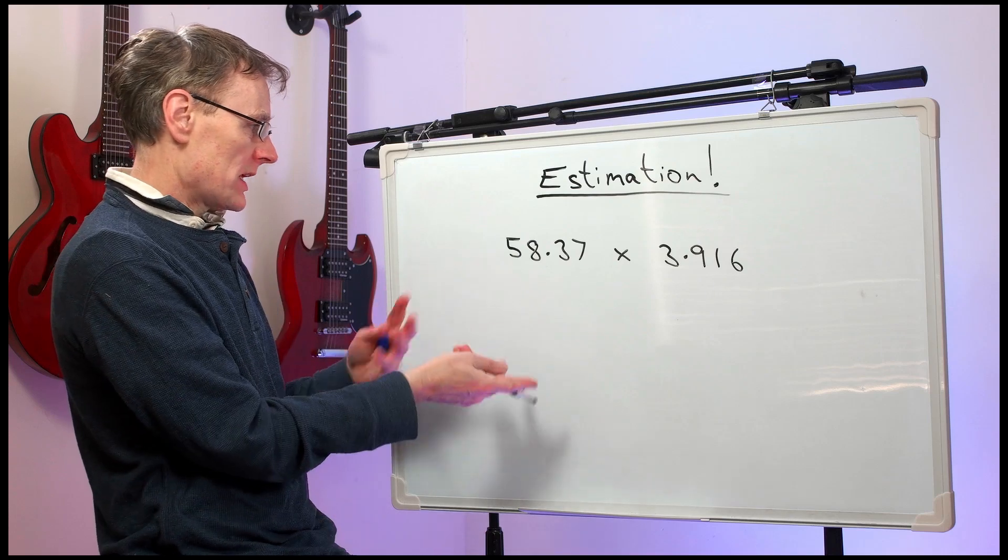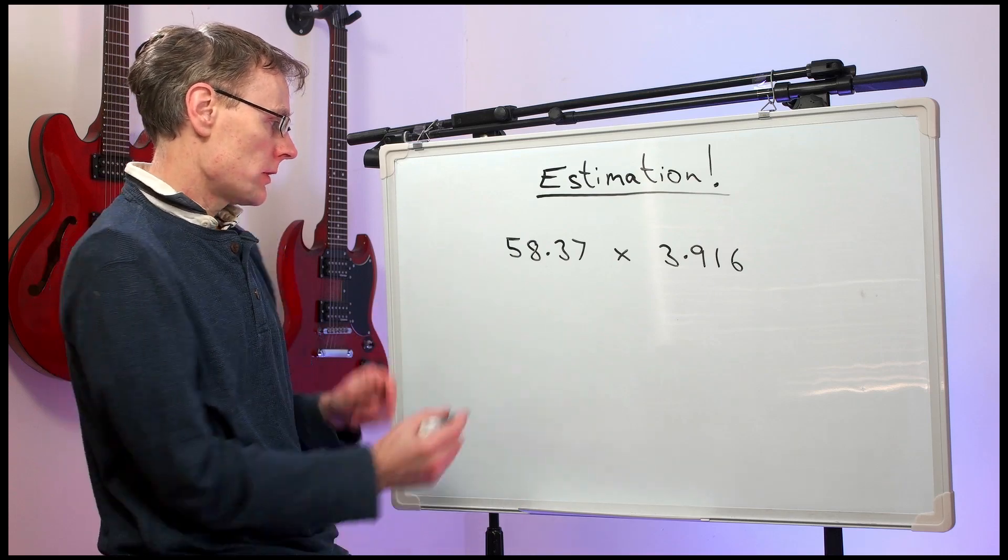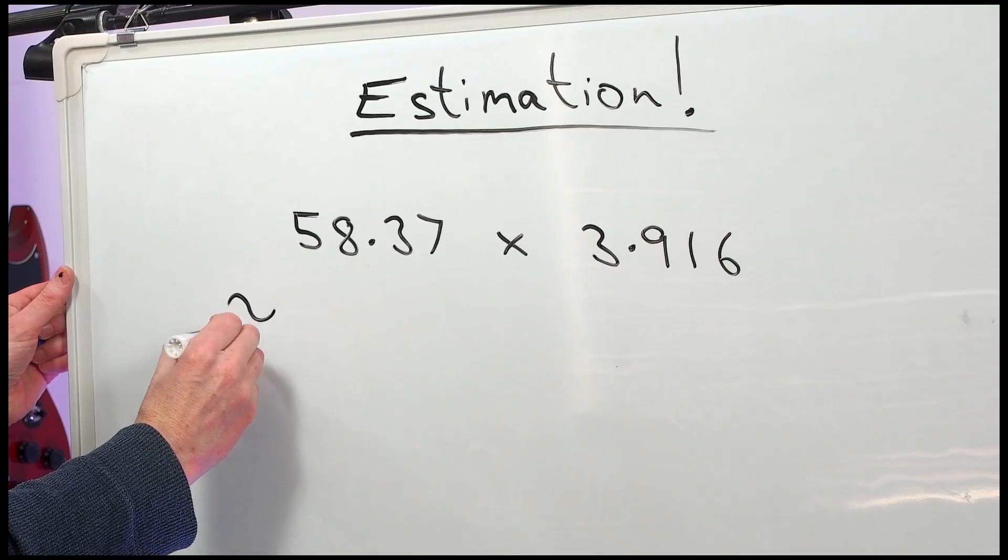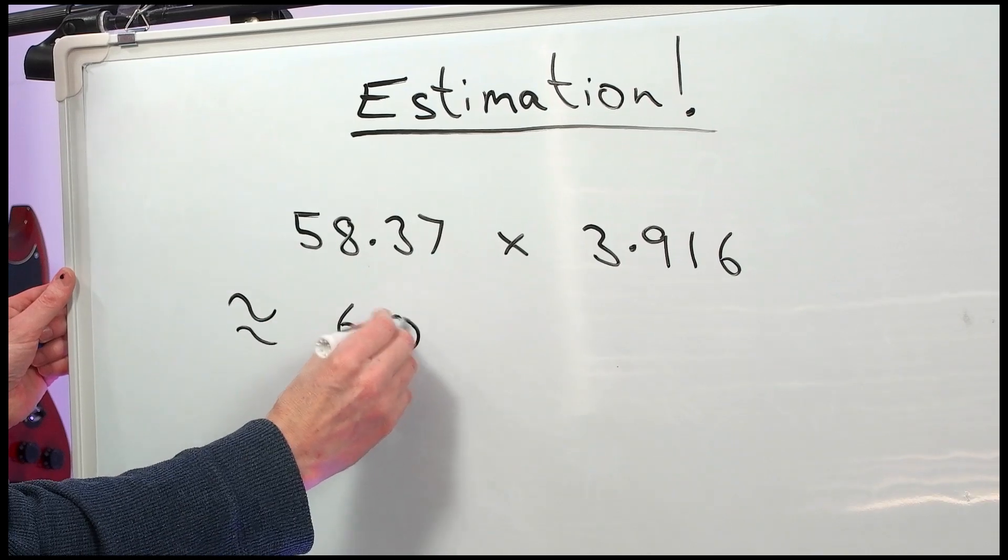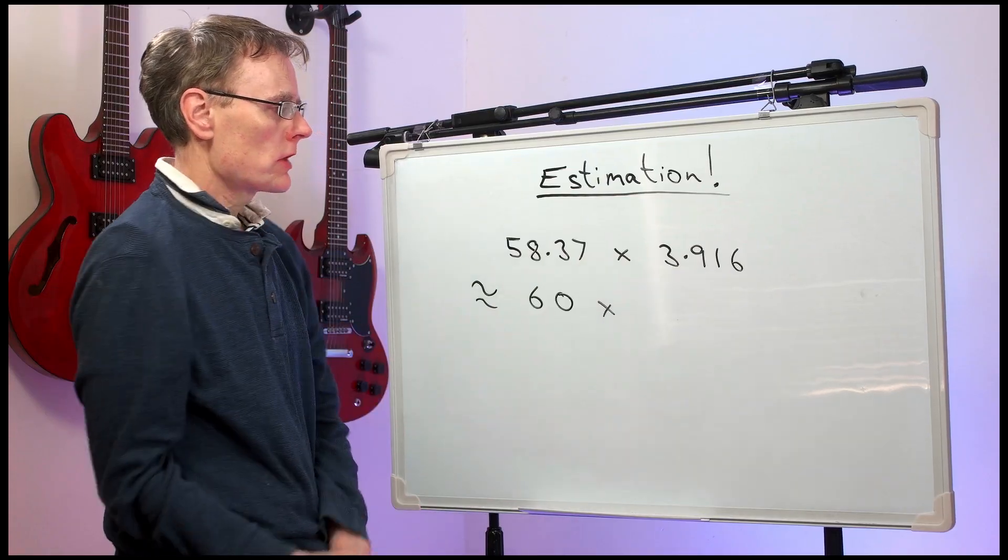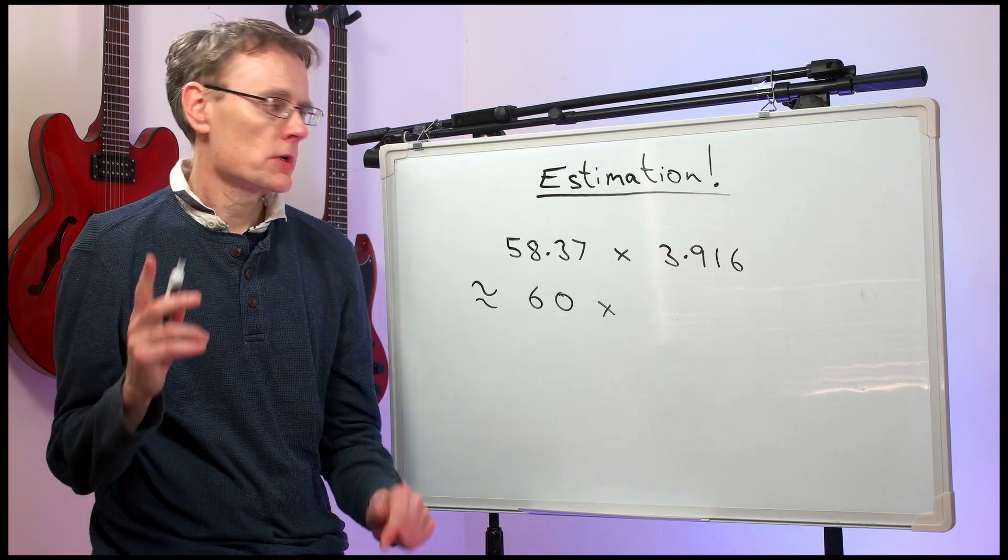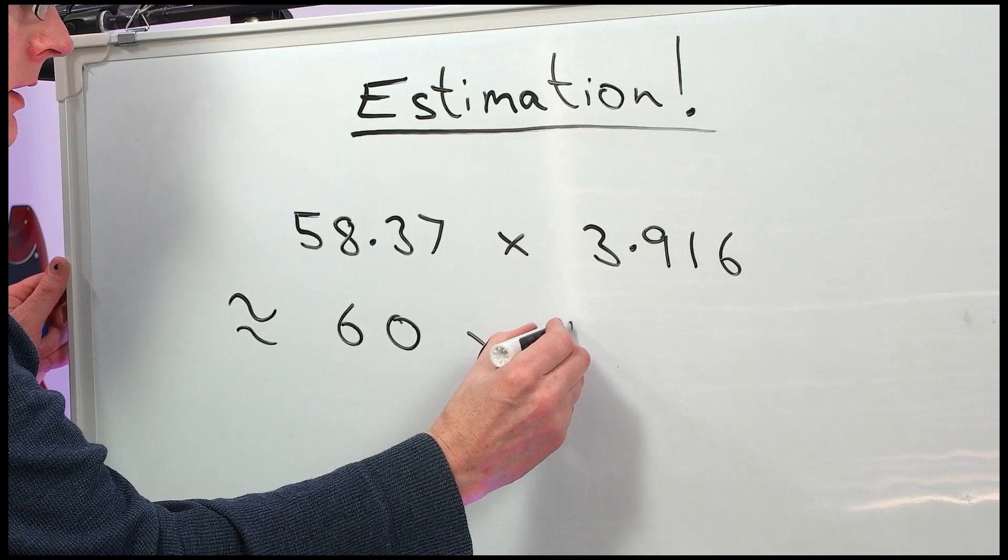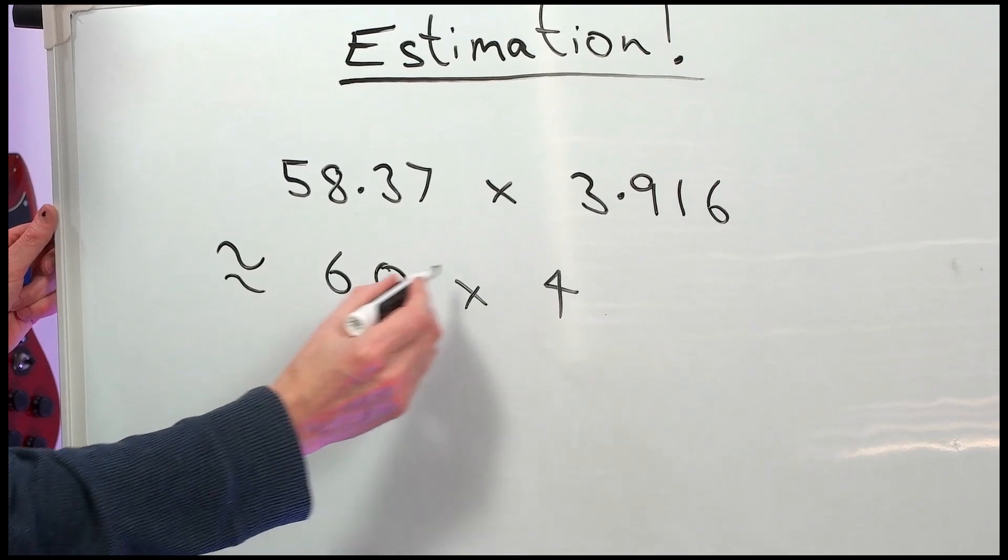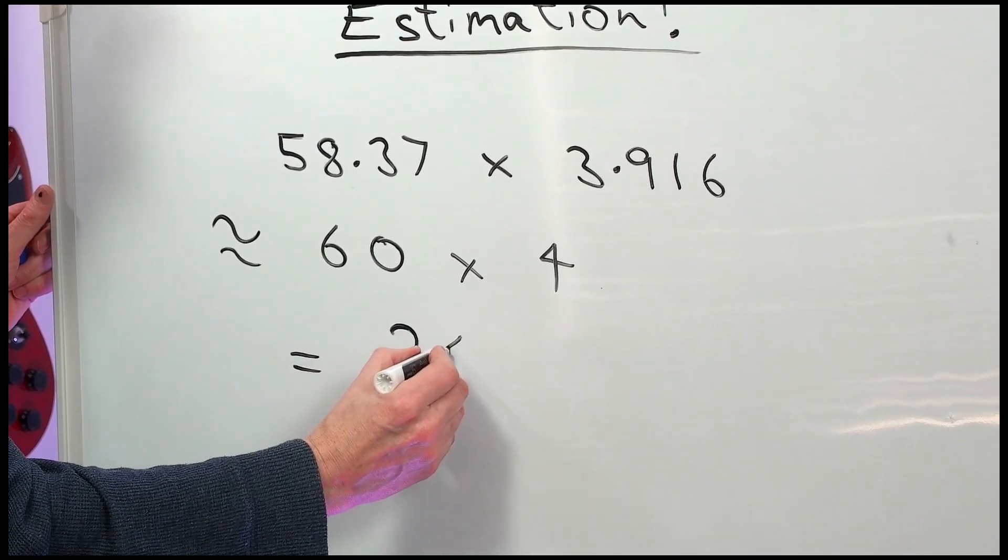This is approximately, what's that, 58.37 is approximately 60. Times 3.916, that's approximately 4. So the answer is roughly equal to, six fours are 24, 240.